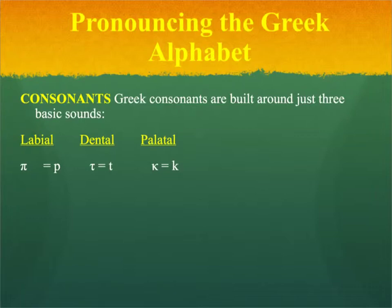The base form of these three groups are: for the labials, Pi; for the dentals, Tau; and for the palatals, Kappa. They're pronounced P, T, and K. If you make those noises — P, T, K — you'll see how they move progressively backwards in your mouth.